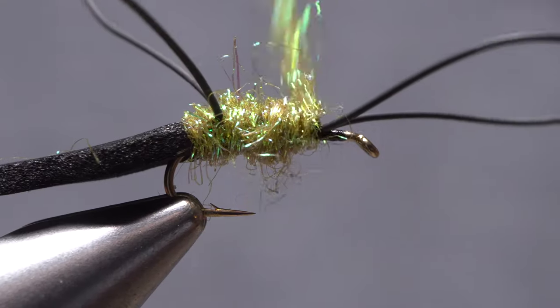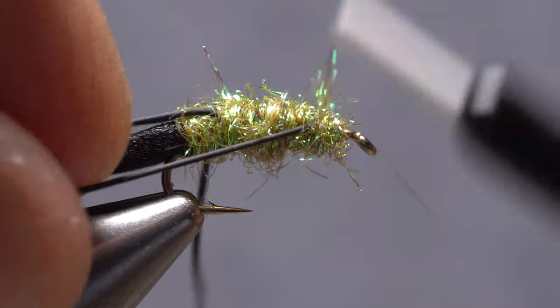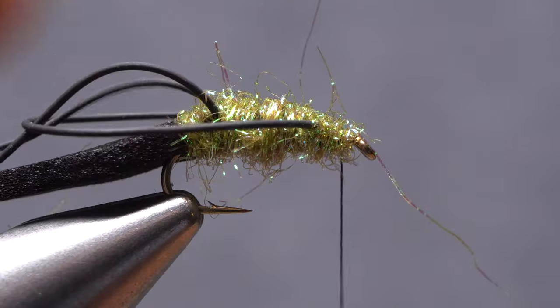Take wraps with this noodle first in back of the front rubber legs then take a few in front to hold them back. End with your tying thread behind the hook eye.